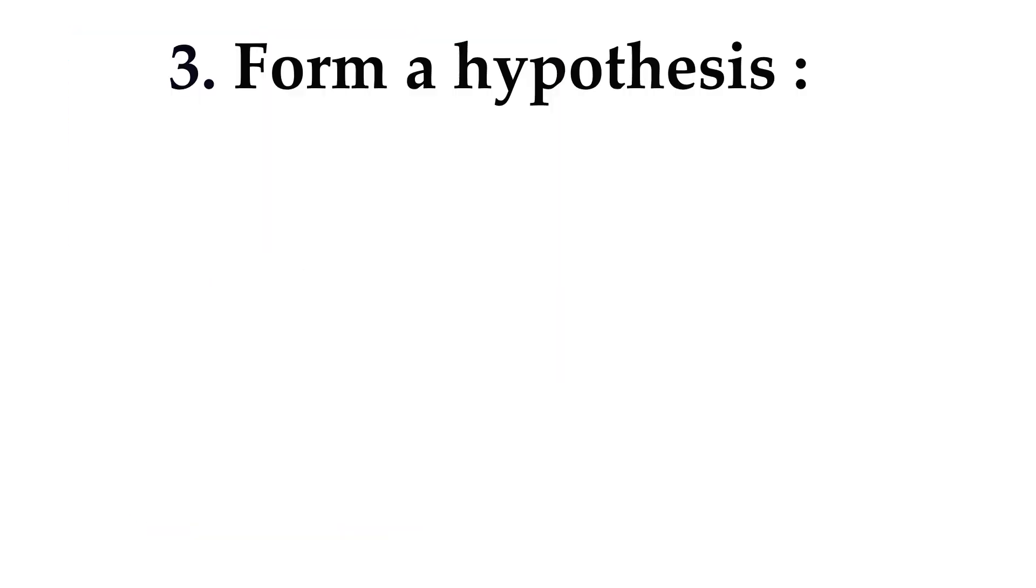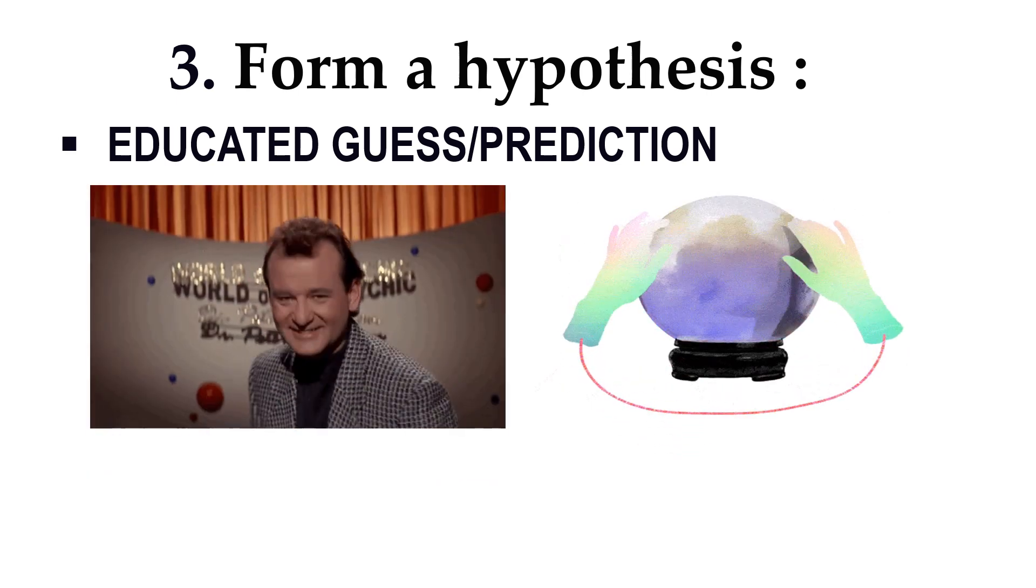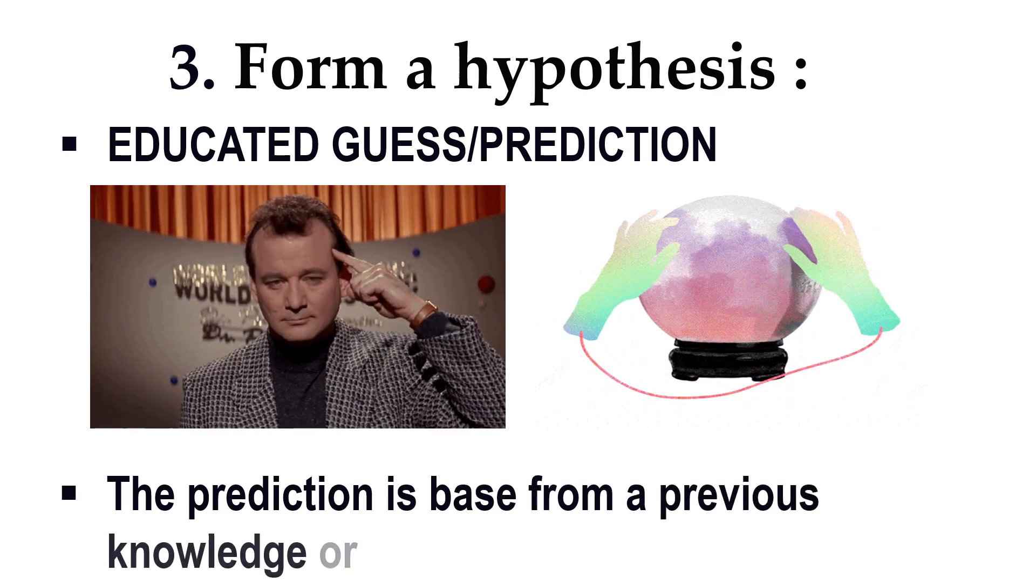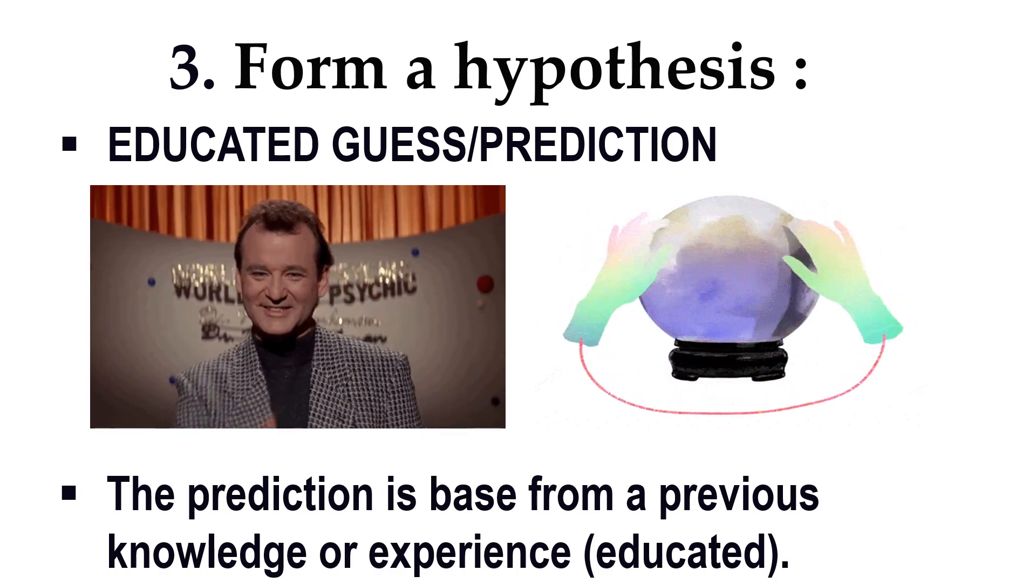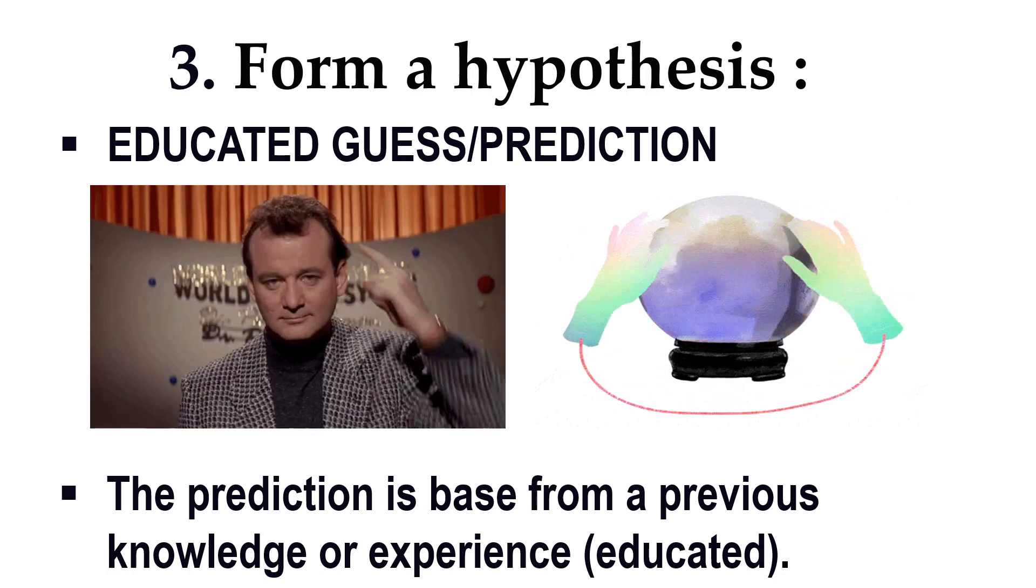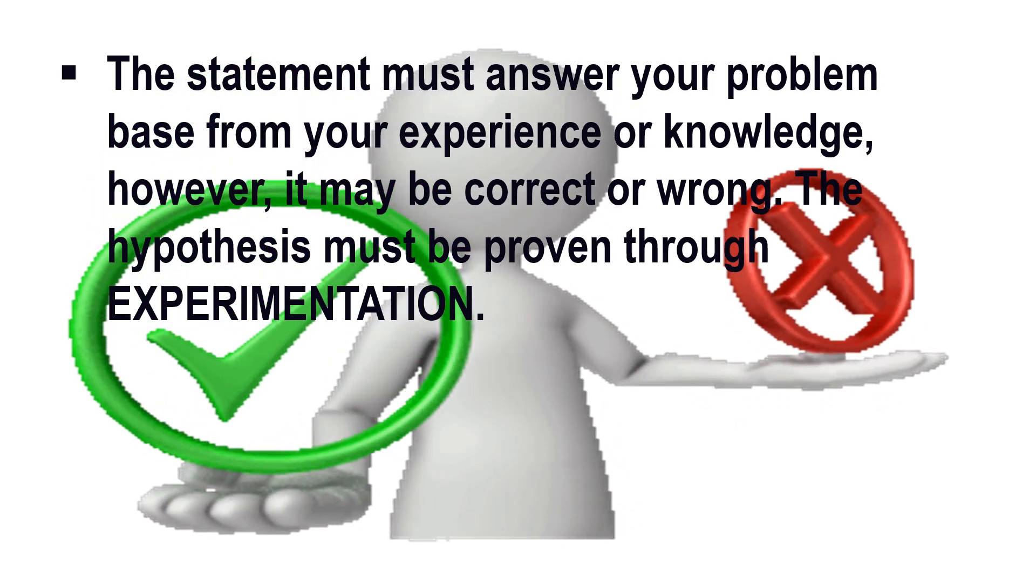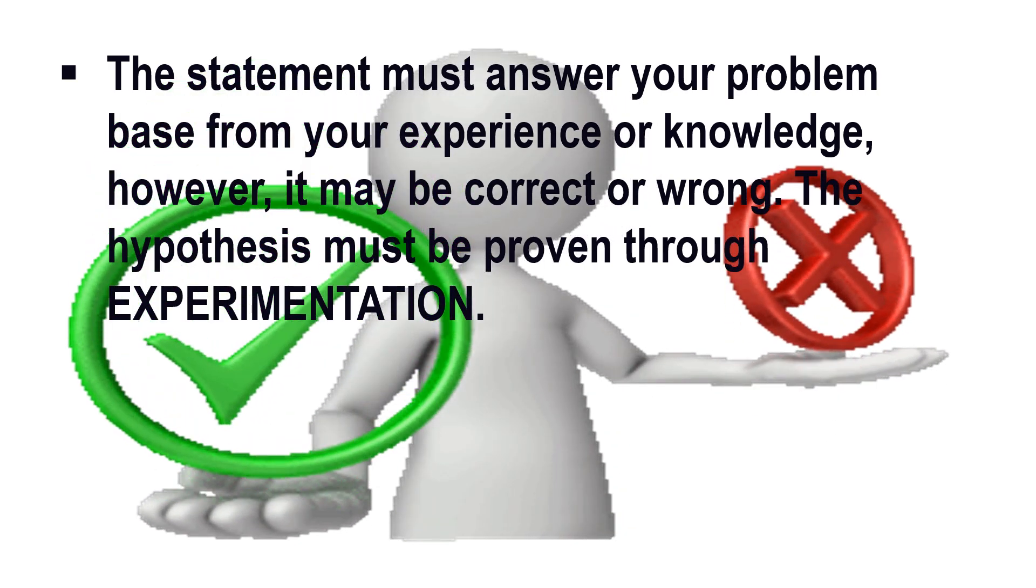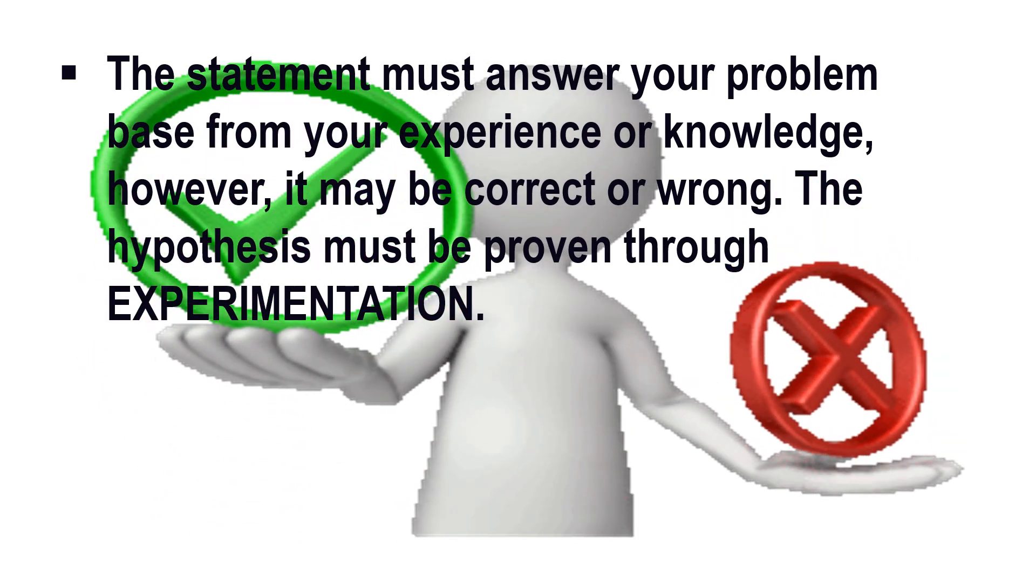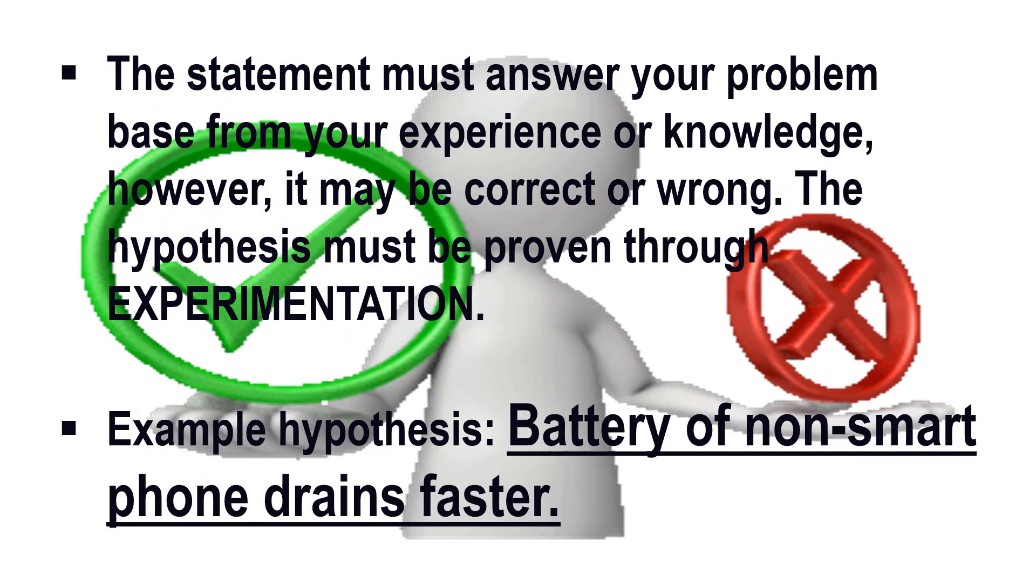Form a hypothesis. What is a hypothesis? A hypothesis is an educated guess or educated prediction. It means that your prediction didn't just came from nowhere because it is based from your previous knowledge or experience. Thus, it is called educated. It is actually a statement that must answer your problem based from your experience or knowledge. However, it may be correct or wrong. The hypothesis must be proven through experimentation. Let's have an example. Battery of non-smartphone drains faster.